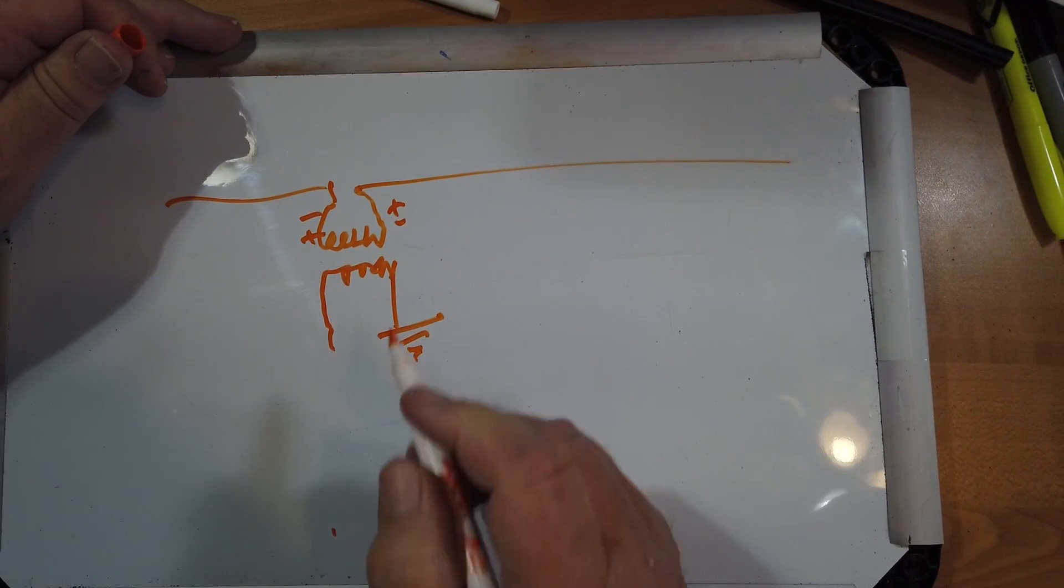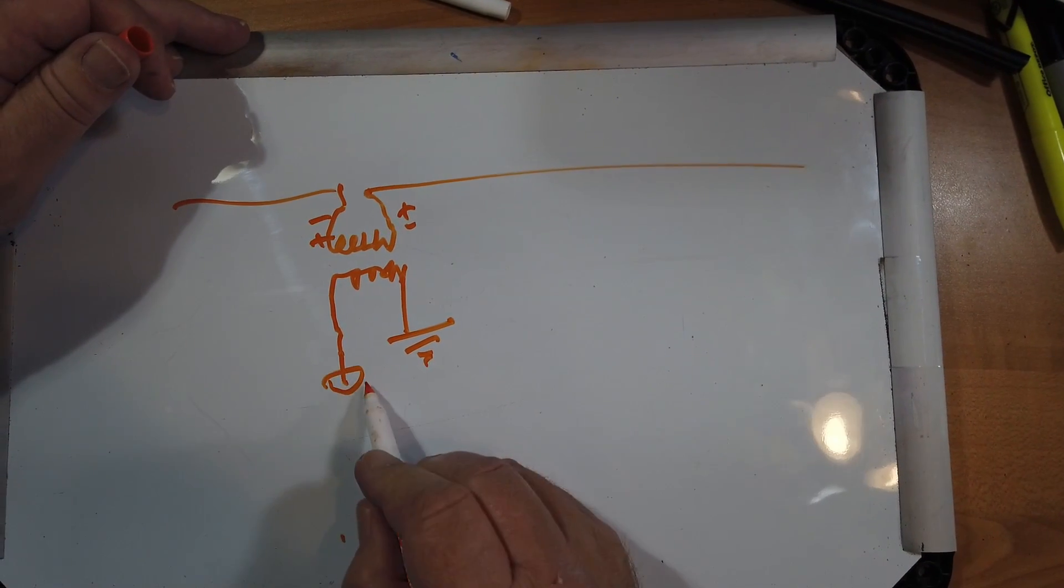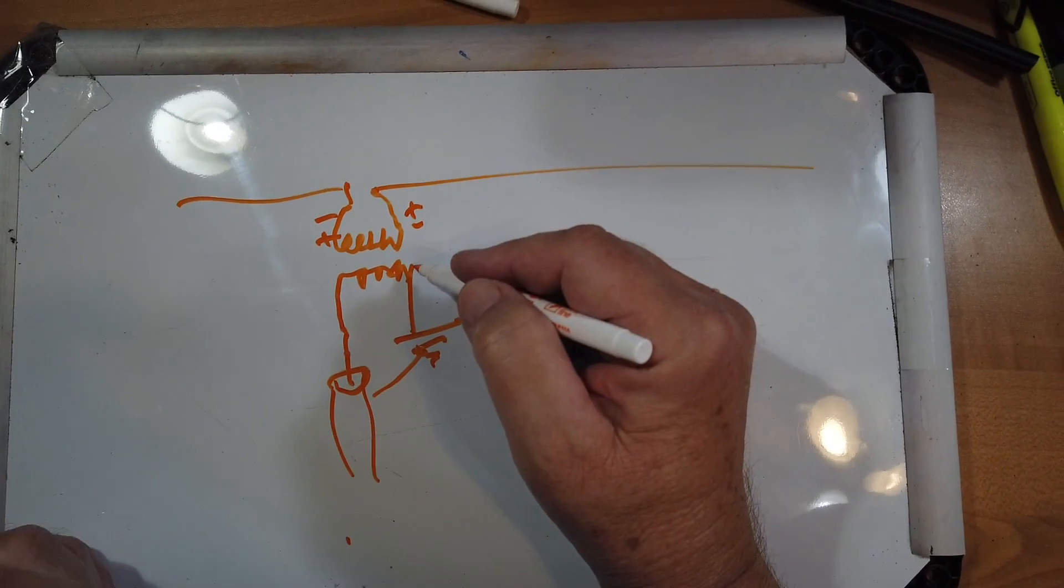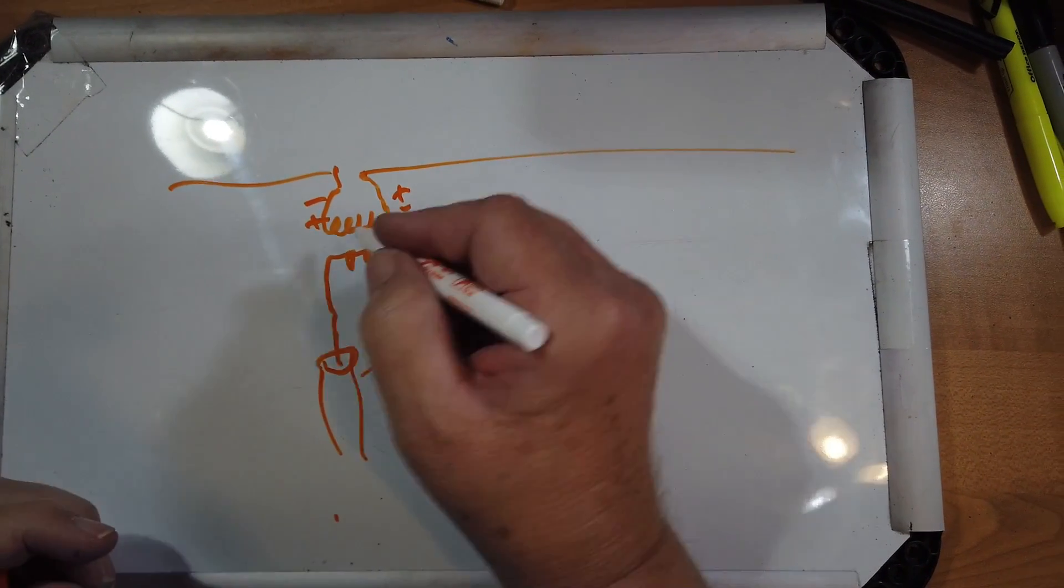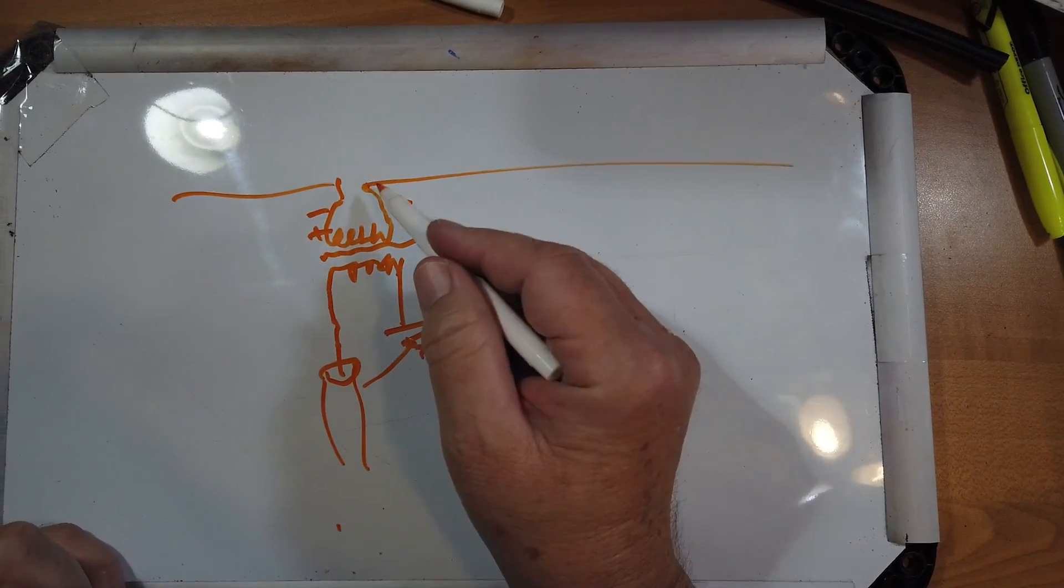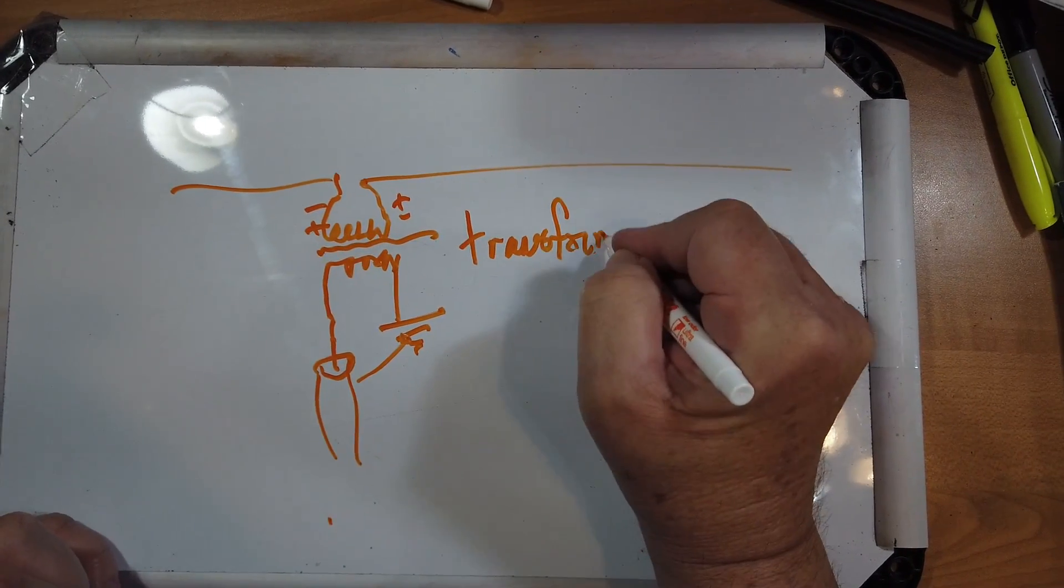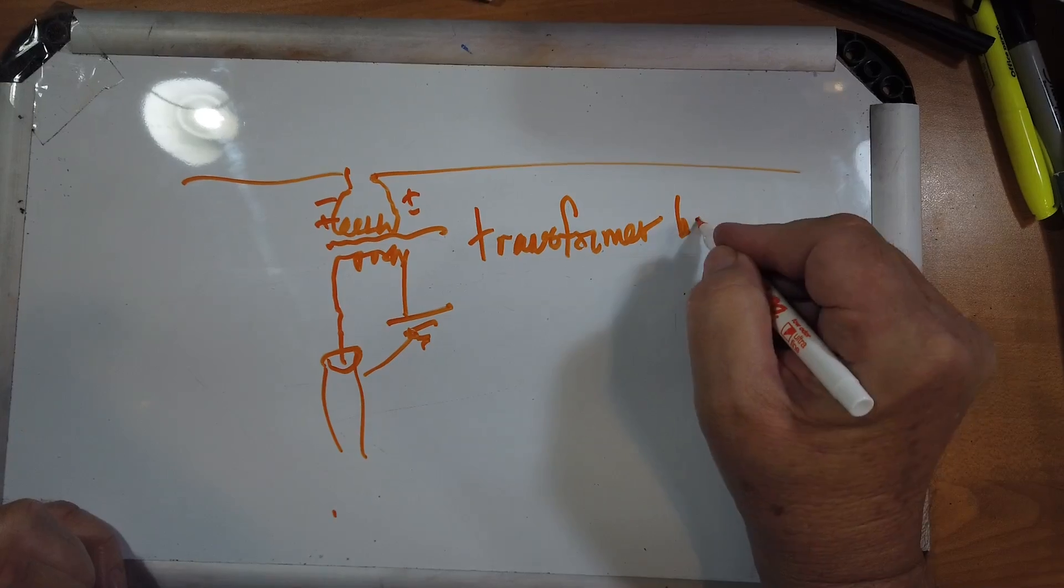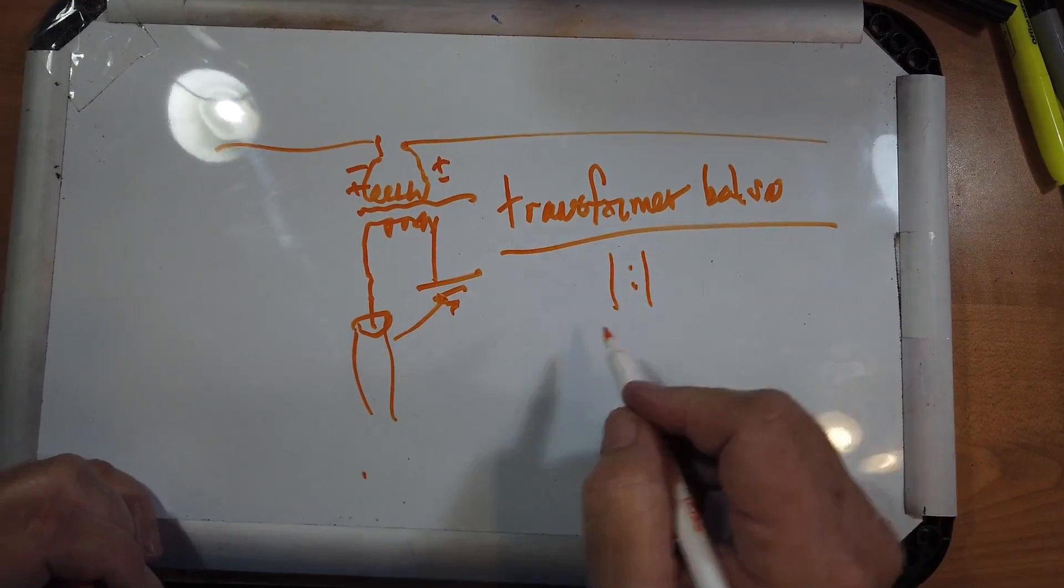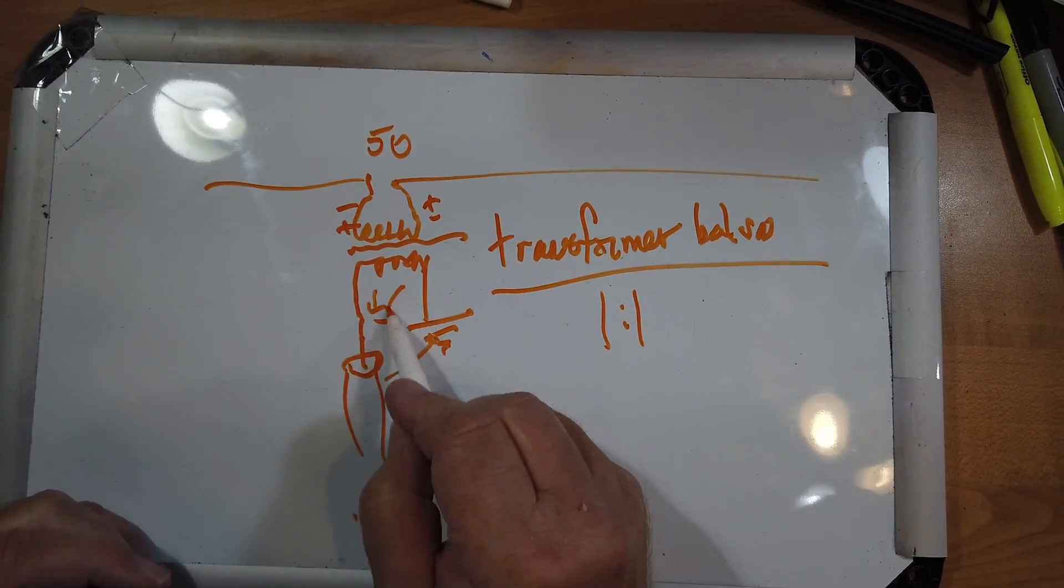And this side over here is grounded, and this side goes to the center conductor of our coax, and this other side is grounded. The transformer doesn't care whether it's balanced or not, but it will go through. There's usually a ferrite core here. So this is the transformer balun. And we want, in this case, a one-to-one ratio in there, because this is 50 ohms, this is 50 ohms.